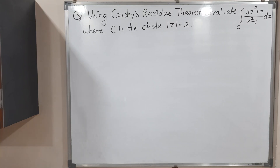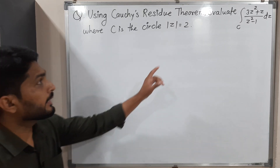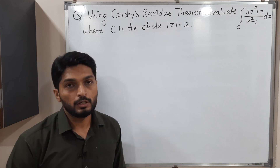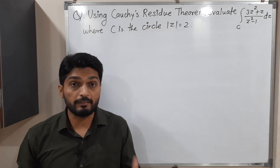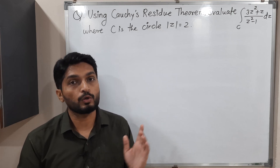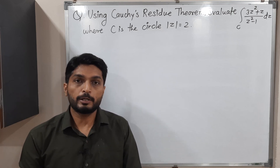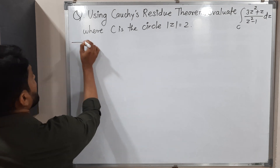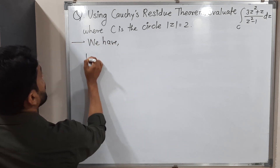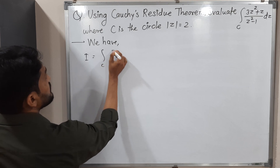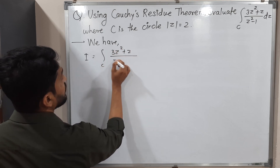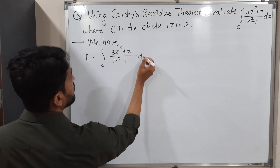Hi everyone. In this video, we are going to solve this integration with the help of Cauchy's residue theorem. In the previous video, we have seen the definition of Cauchy's residue theorem, so it's time to use this theorem to solve this integration. Let me write the given integration first. We have, let us call it as I, integration over C of (3z² + z) / (z² - 1) dz.